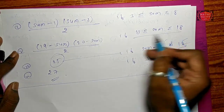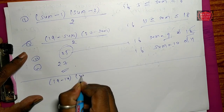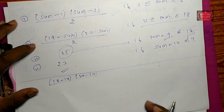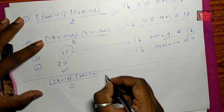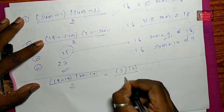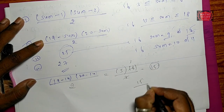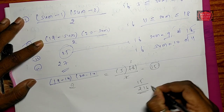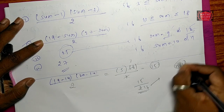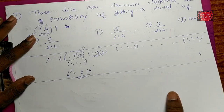We can use this formula — let's substitute here. We get 19 minus 14 equals 5, and 20 minus 14 equals 6. So the result is (5 × 6) / 2 = 15. The total sample points are 216, so the probability is 15 divided by 216.